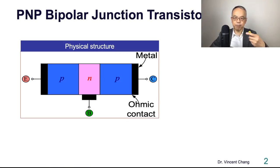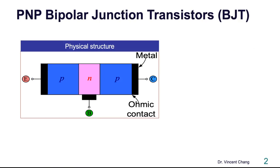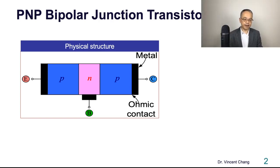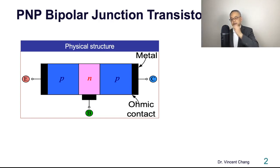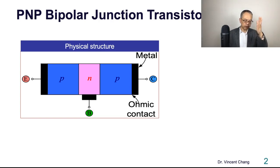Let's start with the PNP bipolar junction transistor. Here's the physical structure. The black material means the metal — it's a three terminal device with metal contacts. There's the interface between the metal and the semiconductor, specifically the P-type semiconductor. This type of interface between metal and semiconductor is called a metal semiconductor junction.